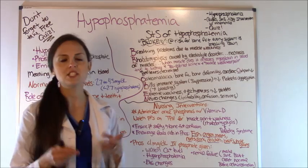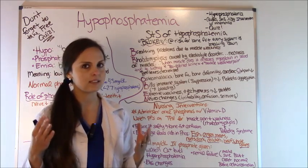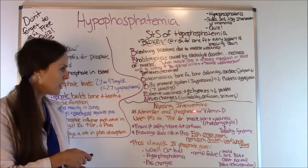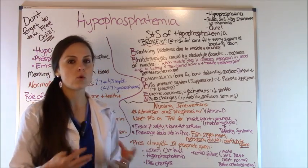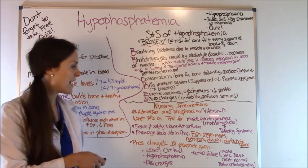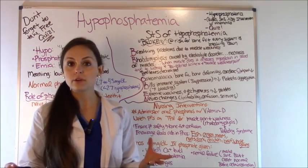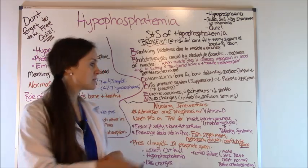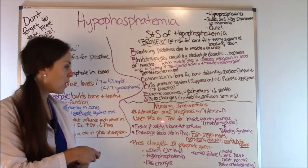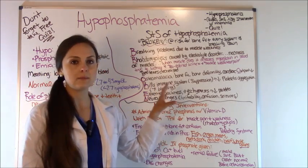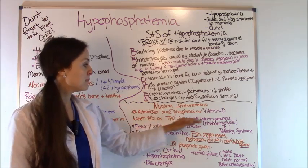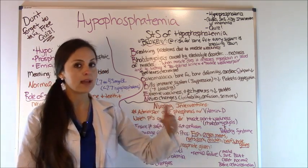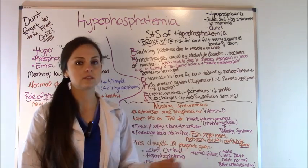As the nurse, know that most doctors may order oral phosphorus with vitamin D — remember, vitamin D is ordered because it helps absorb the phosphorus. Also watch patients who are on TPN because they may develop rhabdomyolysis with muscle pain and weakness, as well as refeeding syndrome. Those patients are at risk because of disrupted phosphate levels.